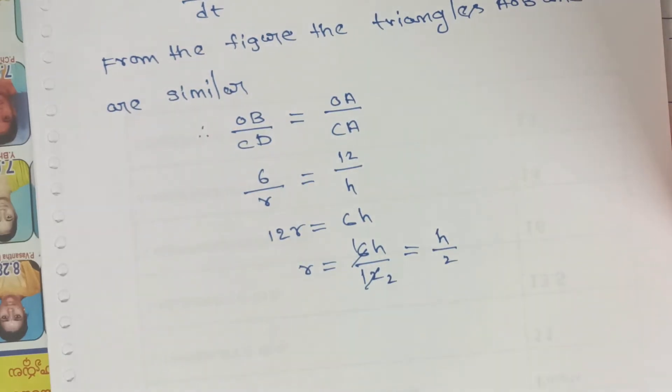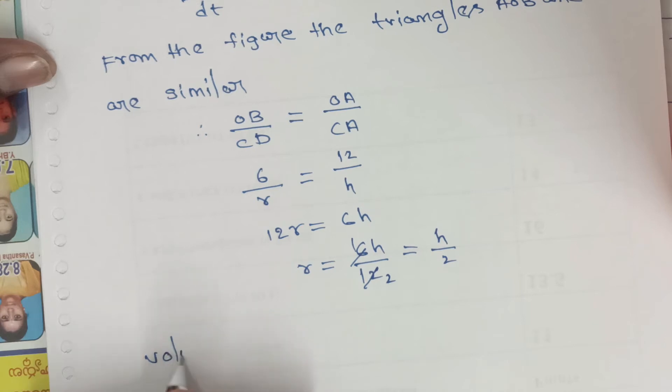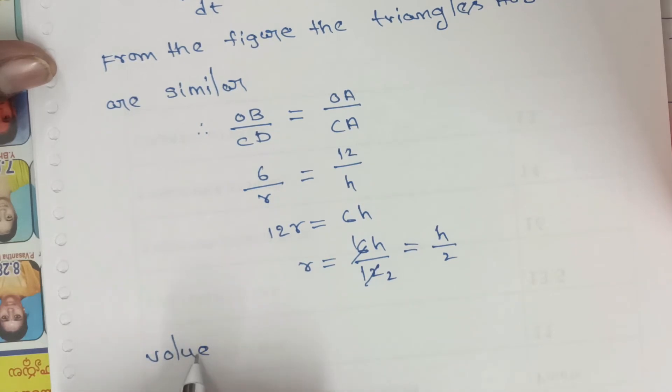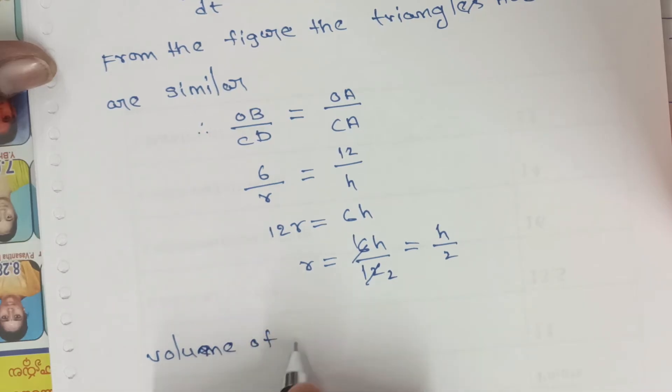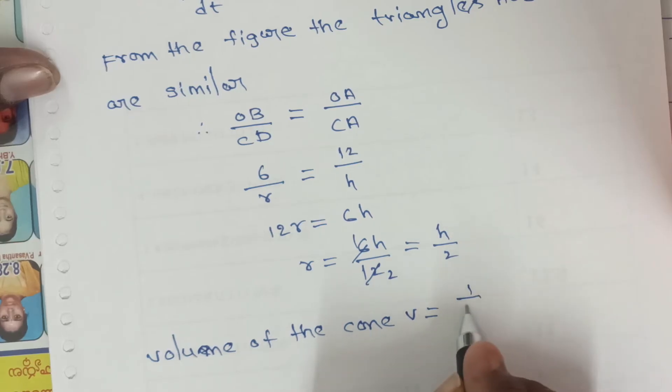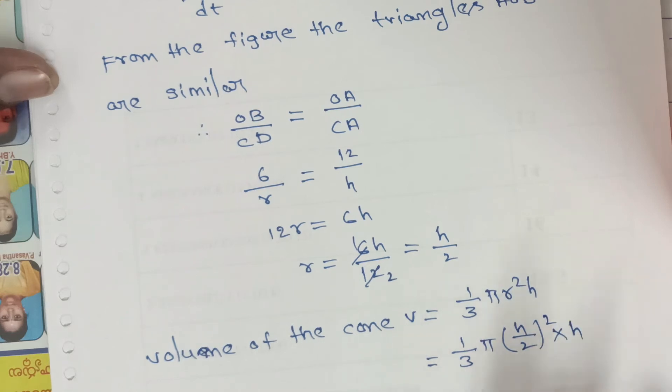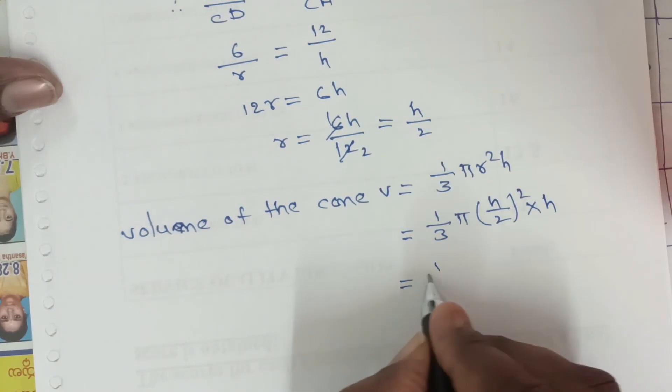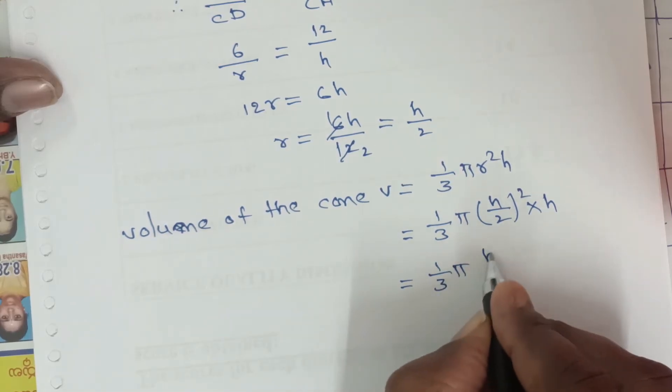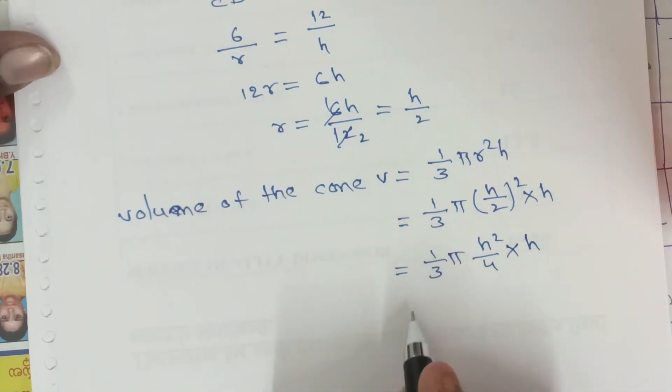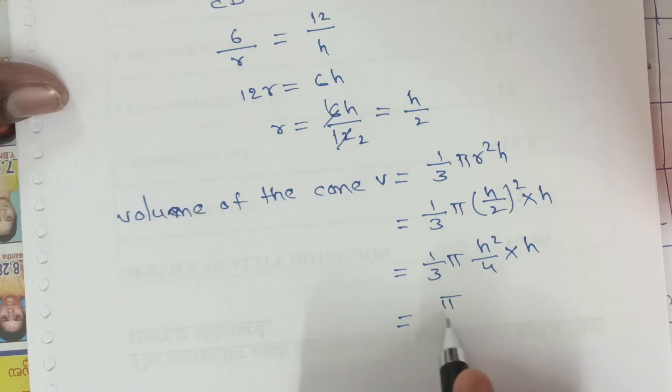Therefore, volume of the cone V = (1/3)πr²h. So V = (1/3)π(h/2)²h = (1/3)π(h²/4)h = (π/12)h³. This is the volume.